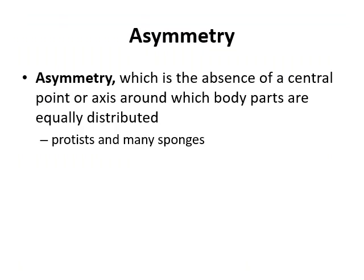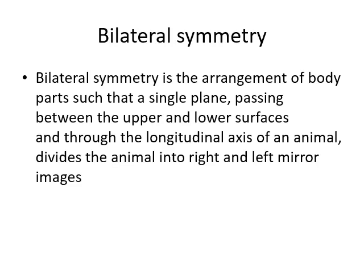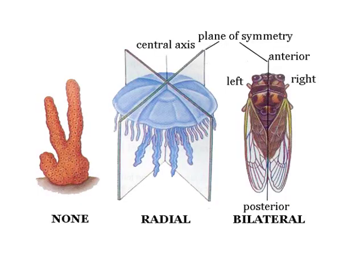Asymmetry is the absence of a central point or axis, and body parts are not equally distributed — as seen in sponges. Radial symmetry is the arrangement of body parts such that any plane passing between the upper and lower surfaces through the longitudinal axis divides the animal into right and left mirror images. For example, a jellyfish has a central axis and each part of the body is a mirror image around that central point. Bilateral symmetry has two mirror images around the axis — left and right — just like your body.